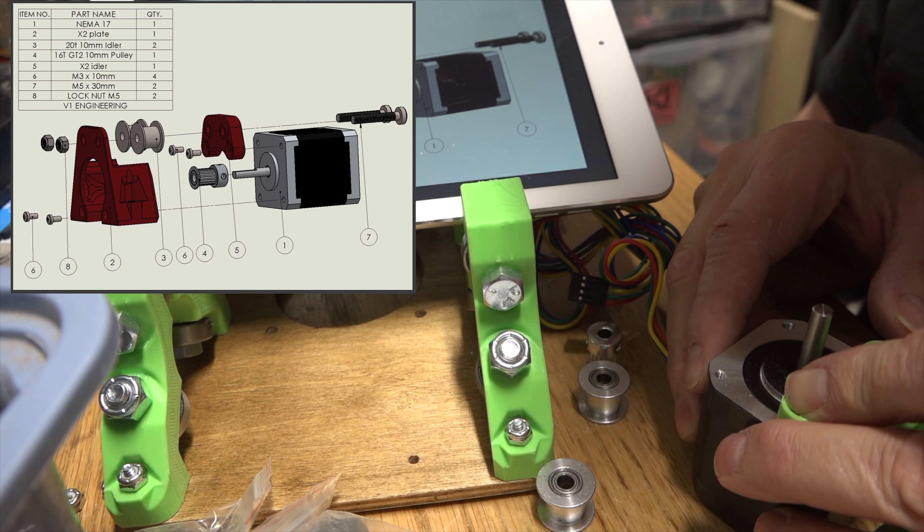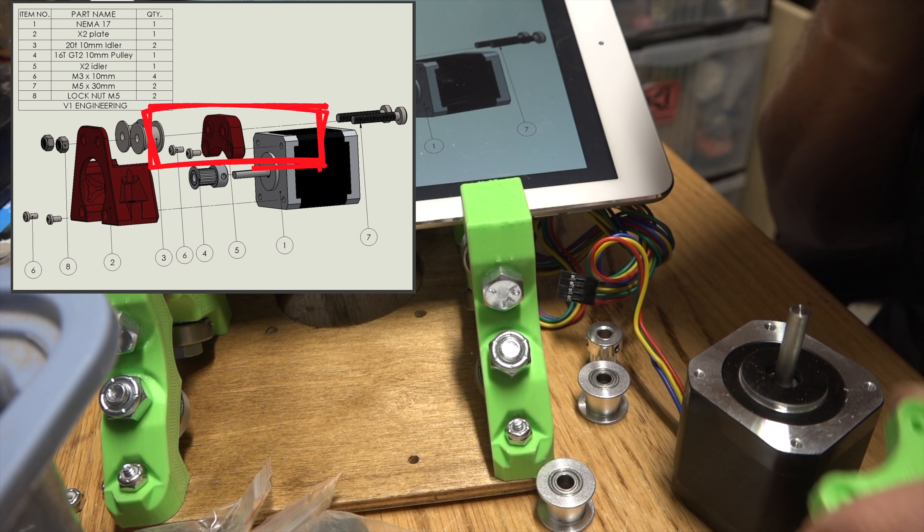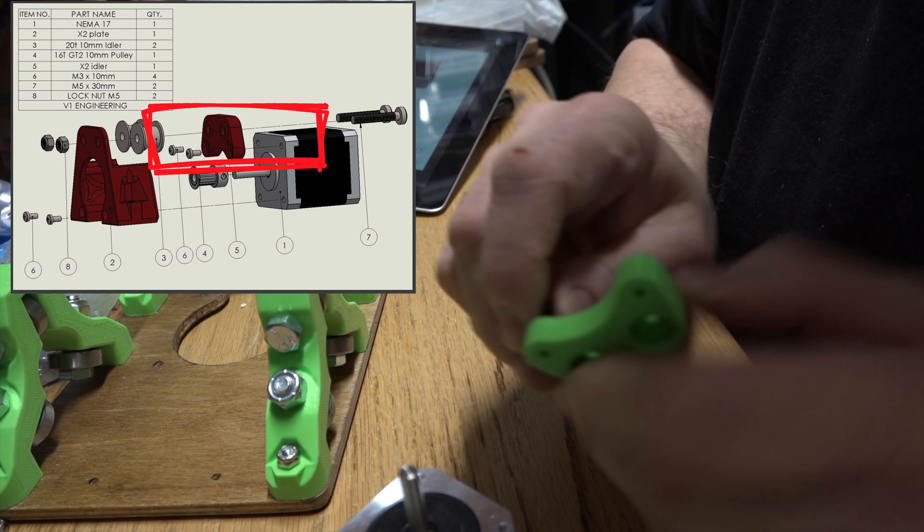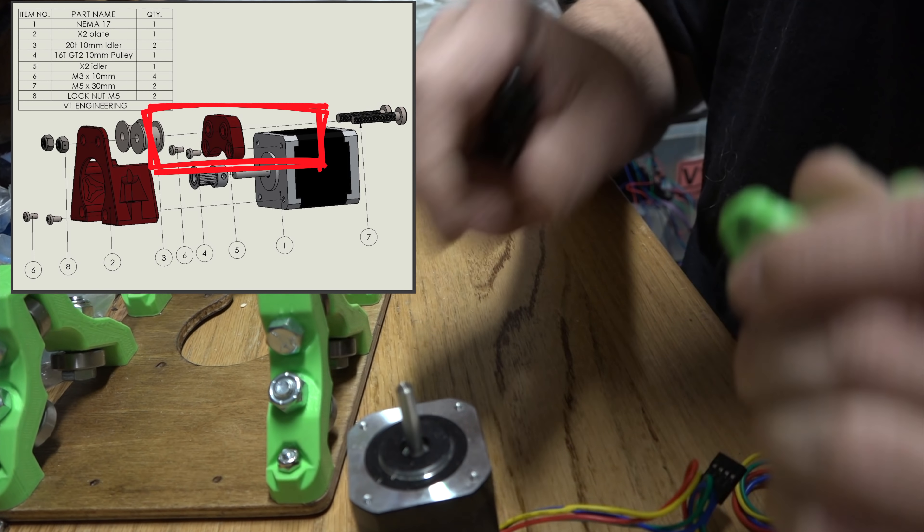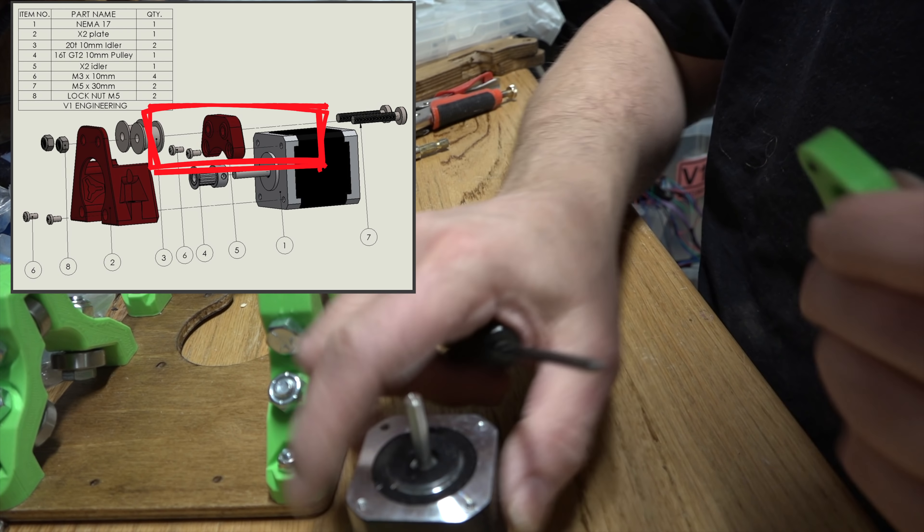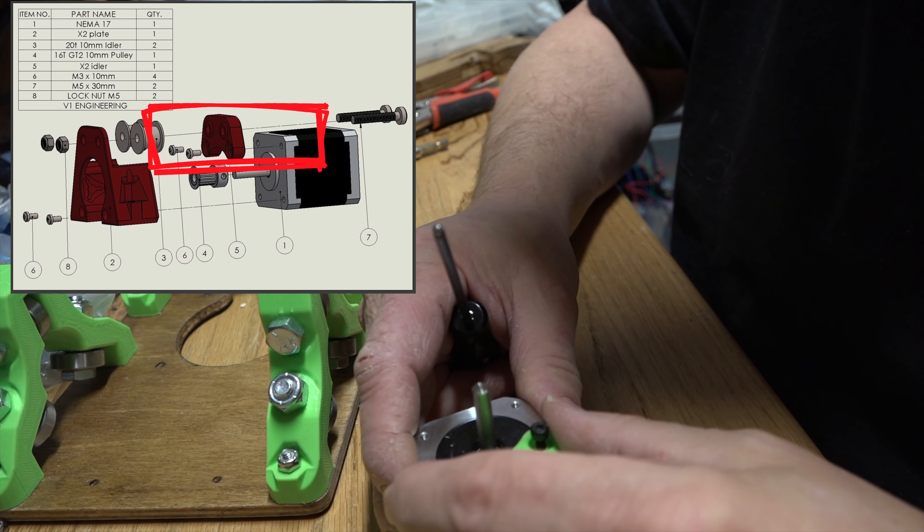So we need some M3 by 10s. Yes, these M3 by 10s definitely go in here. And it really doesn't show where the wires should be coming off on that, so we'll just do it this way.